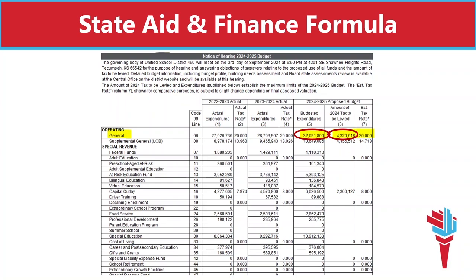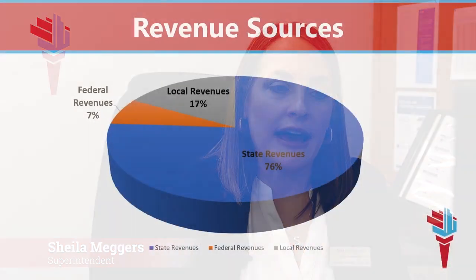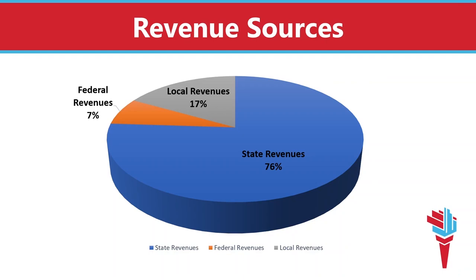These dollars go to the state treasurer, who then redistributes them to districts based on the current funding formula in Kansas. The intent of the formula is to equalize educational opportunities for all students. In Shawnee Heights, we will collect $4.3 million locally, but will be funded for approximately $32 million worth of expenditures in this fund. The actual number from the state will depend on our final student counts for the year. This graph provides a quick overview of where our anticipated revenue will come from: 76% from the state, 17% from local revenue such as property taxes, gifts, and donations, and 7% from federal programs.